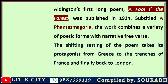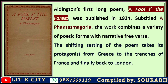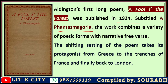This is Aldington's first long poem, published in 1924 with the subtitle 'A Phantasmagoria.' The work combines a variety of poetic forms and free verse. The setting shifts, and the protagonist moves from Greece to the trenches of France during the First World War, and finally back to London. In a typical manner of 'The Waste Land,' it is also a poetic montage.